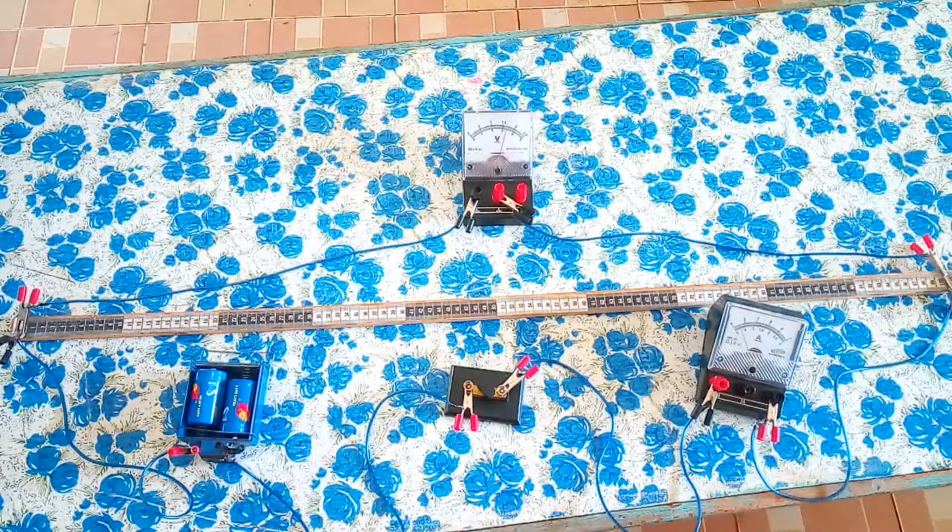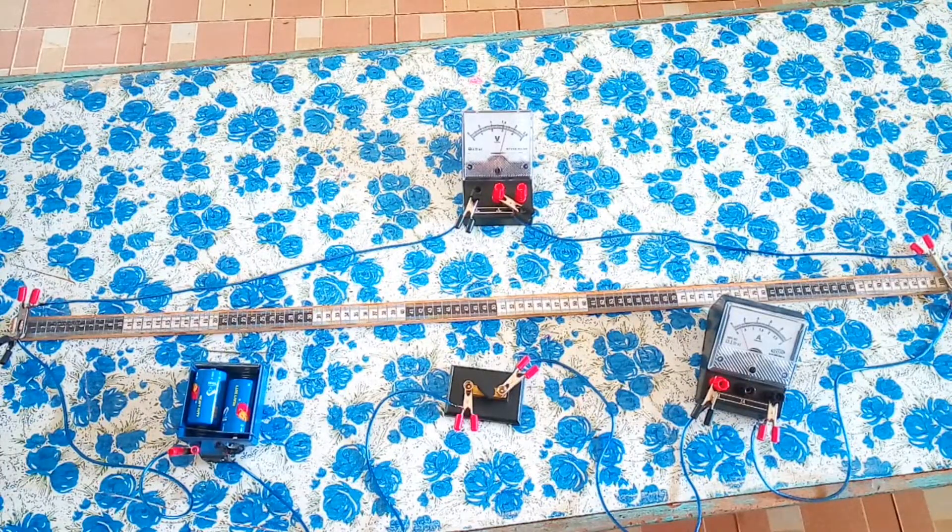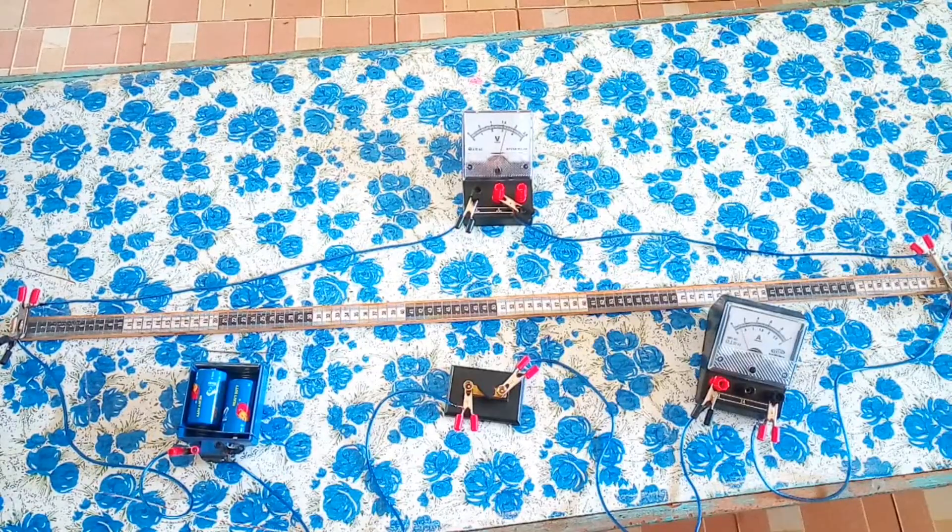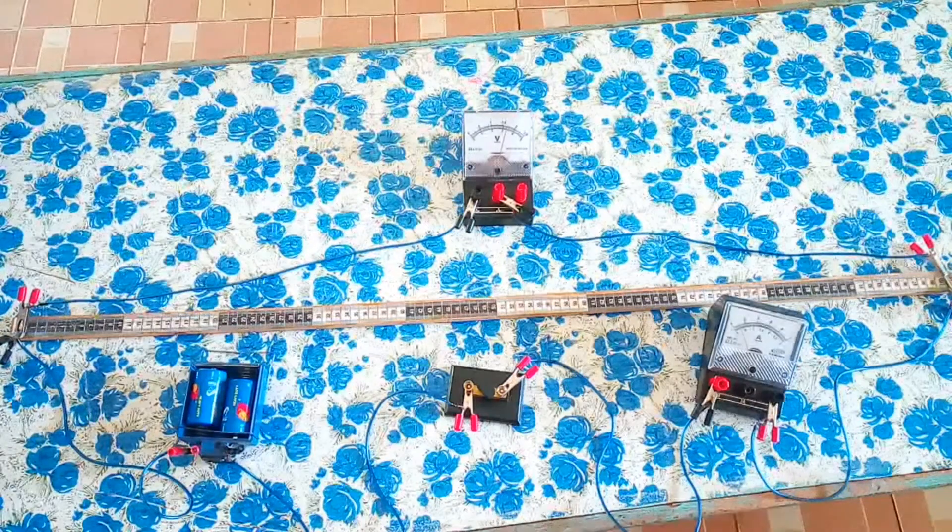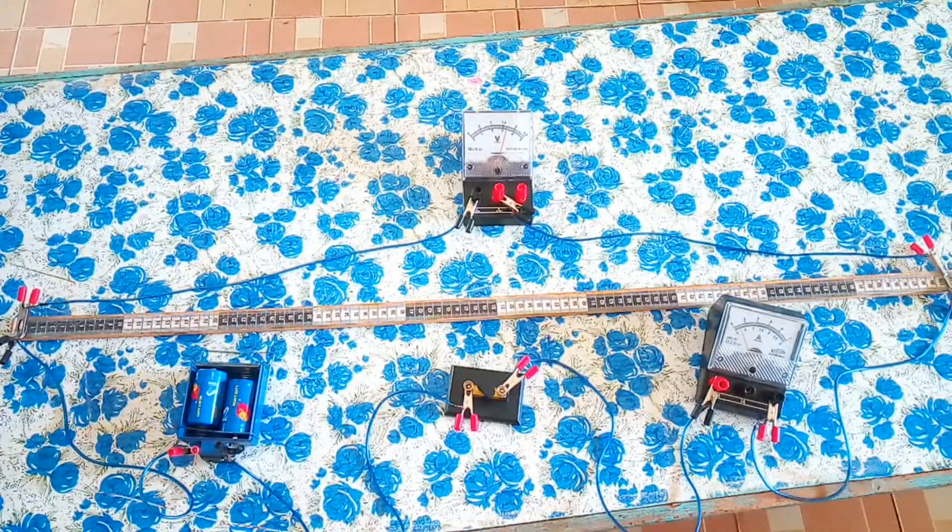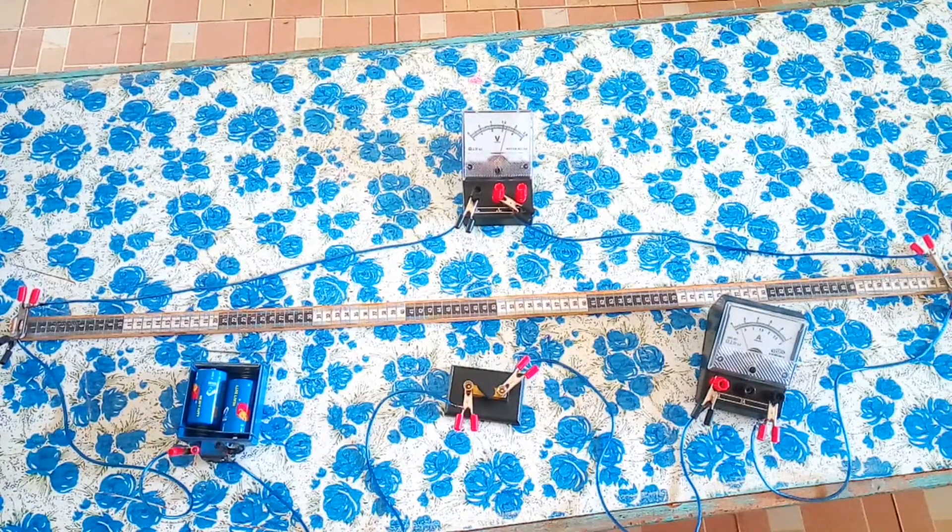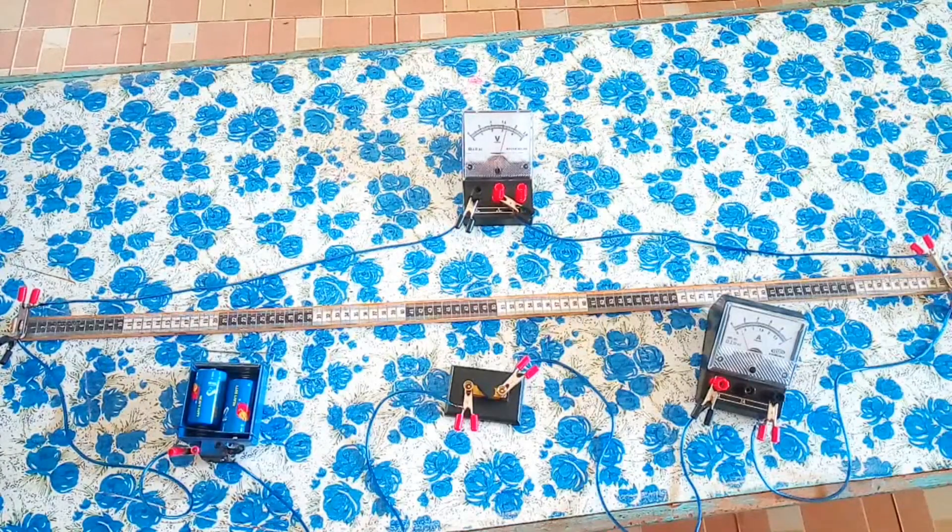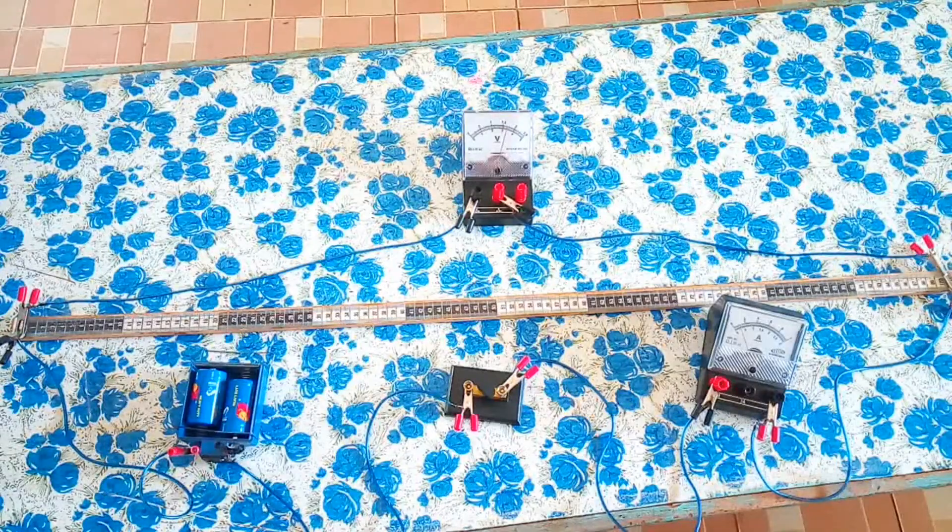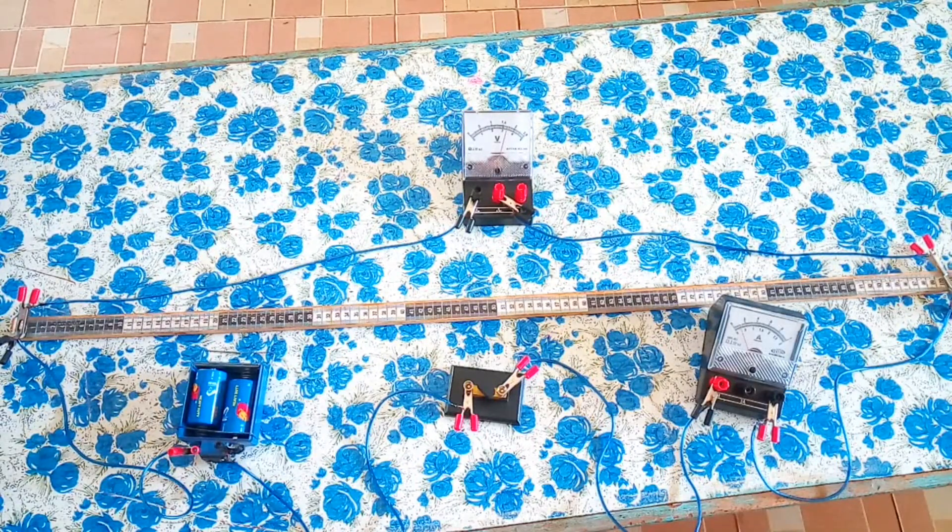Then for the ammeter, we are using the upper scale as well, that is 0.1. So we have the two values, so we can use now the two values to determine the resistivity.